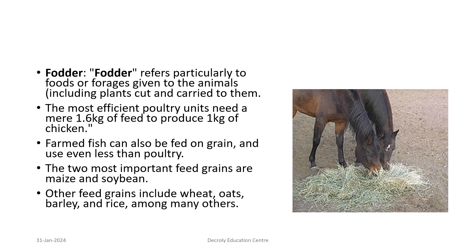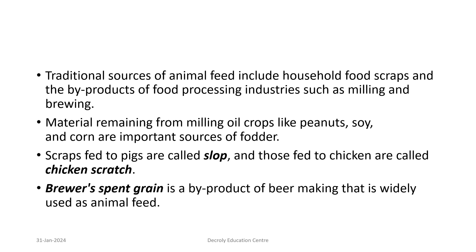The most efficient poultry units need a mere 1.6 kg of feed to produce 1 kg of chicken. Farmed fish can also be fed on grain, and use even less than poultry. The two most important feed grains are maize and soybean. Other feed grains include wheat, oats, barley, and rice, among many others. Traditional sources of animal feed include household food scraps and by-products of food processing industries such as milling and brewing. Material remaining from milling oil crops like peanuts, soy, and corn are important sources of fodder. Scraps fed to pigs are called slop, and those fed to chickens are called chicken scratch. Brewer's spent grain is a by-product of beer making widely used as animal feed.